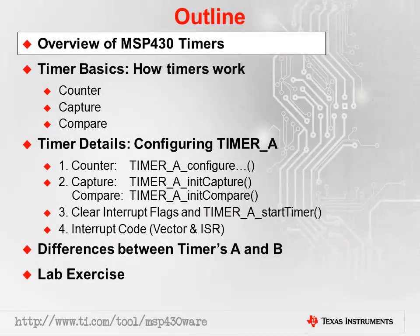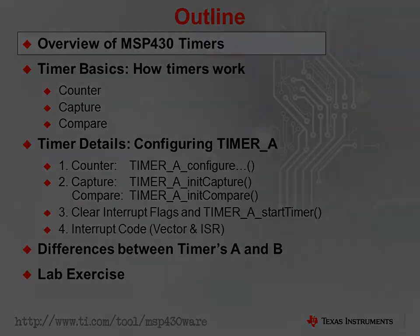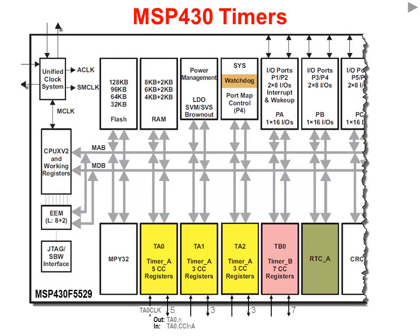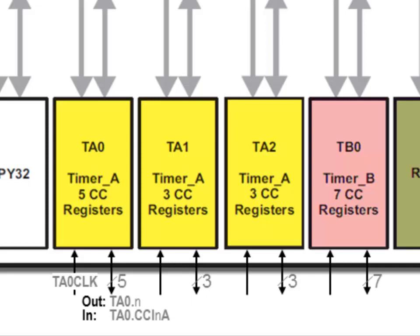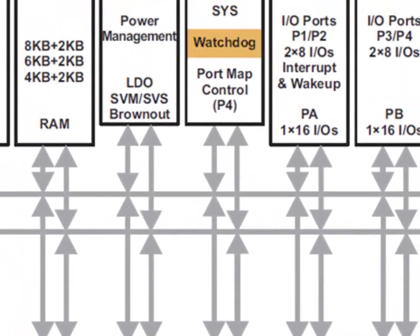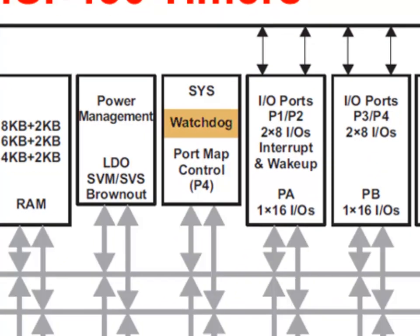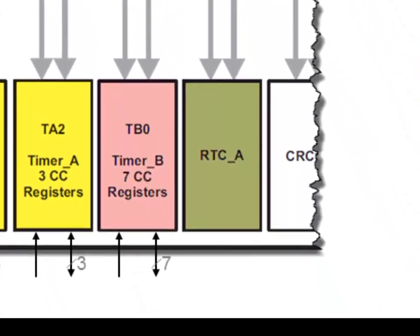We begin with a high-level overview of the MSP430 timers. The MSP430 F5529 timers are highlighted on this diagram. The timers shown here are similar to what you'll find on most MSP430 devices, though not all MSP430s have as many timers as this. The instances of Timer A are marked with yellow, Timer B is marked with pink, the watchdog timer is highlighted with light brown, and dark brown highlights the real-time clock, RTC_A.